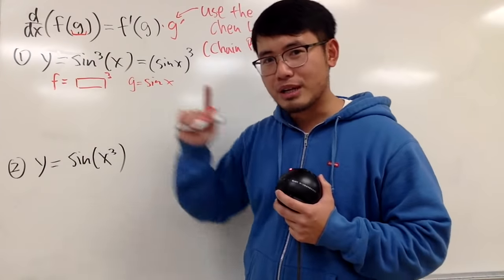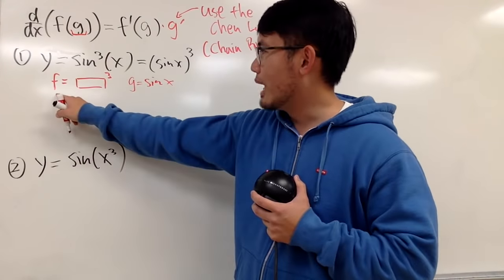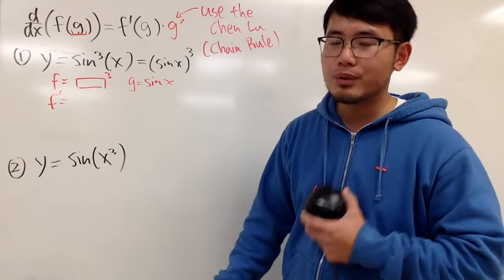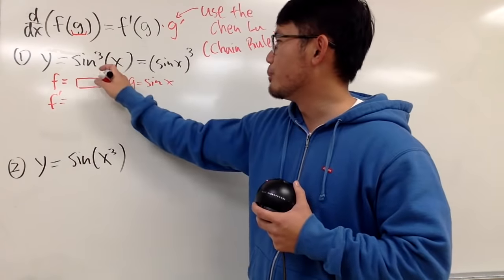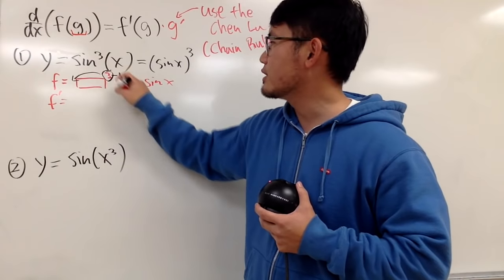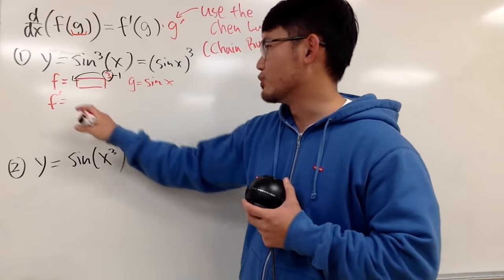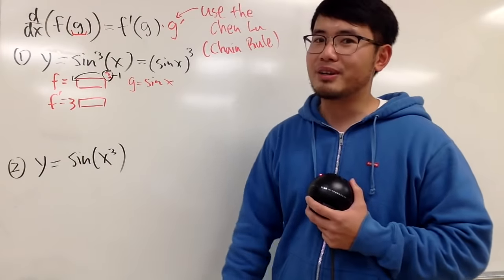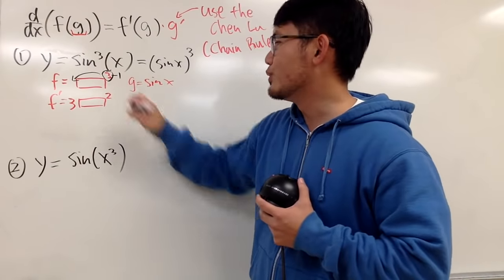Anyway, because now you just have to ask yourself, when you have a box to the third power, what is the derivative of that? Well, of course, we can bring the power to the front and then minus one, so that's the usual power rule. You get three box. You get the box right here, okay? And then three minus one is of course two, and that's it.